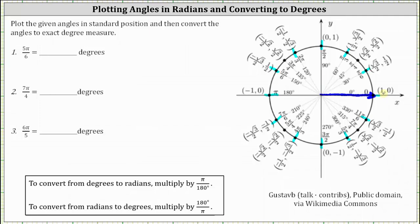Now that we have the circle marked off in one-sixth pi radians, we can easily determine the terminal side of five-sixth pi radians. Starting along the positive x-axis and rotating counterclockwise, we count one-sixth pi, two-sixth pi, three-sixth pi, four-sixth pi, and five-sixth pi radians. This is the terminal side of five-sixth pi radians. We also need to include the arrow that shows the direction and amount of rotation.